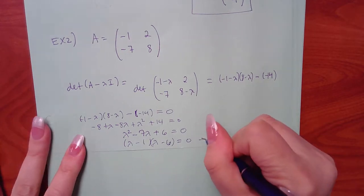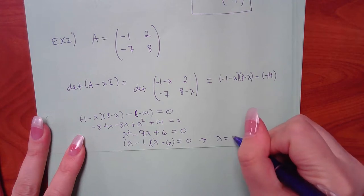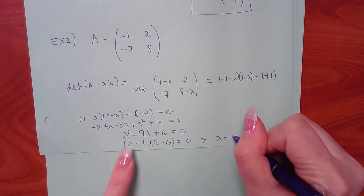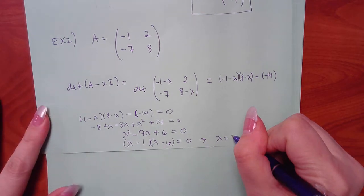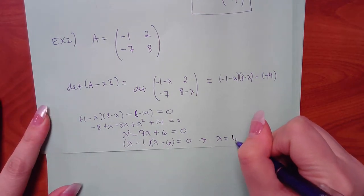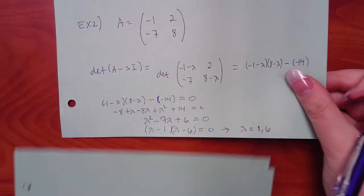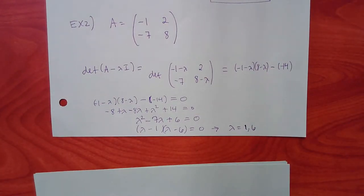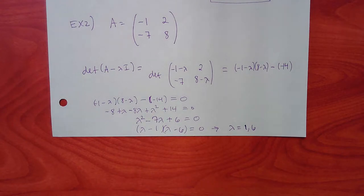Setting each factor equal to zero gives lambda equals 1 and lambda equals 6. Two lambdas means two eigenvectors. We solve each one separately using its own matrix equation.